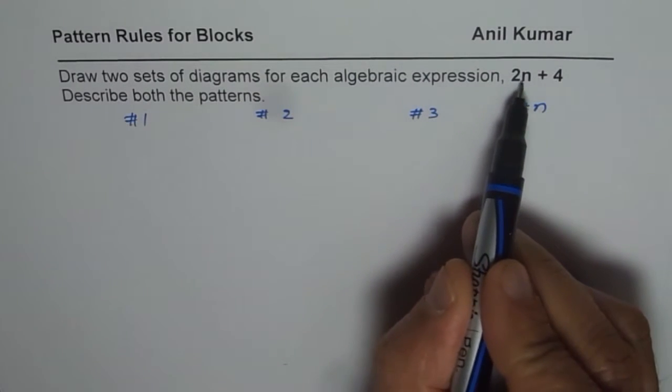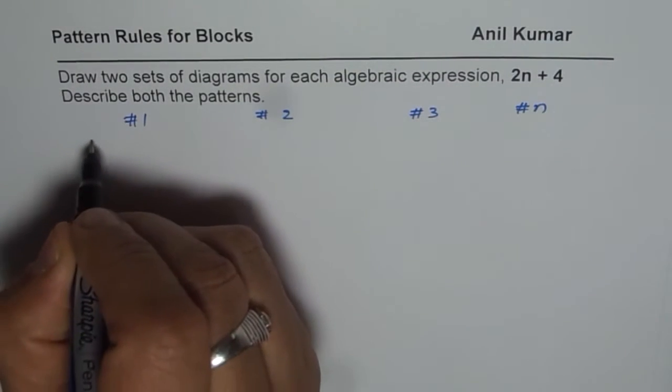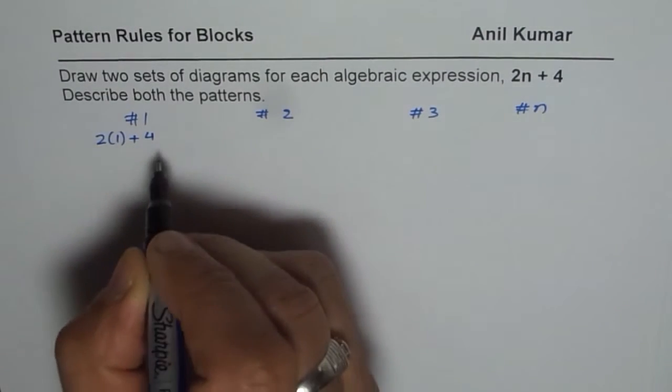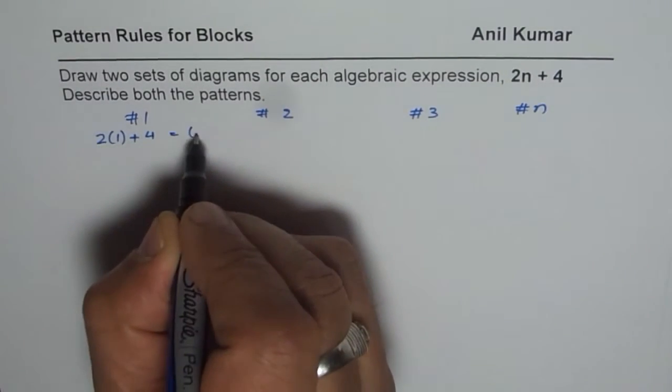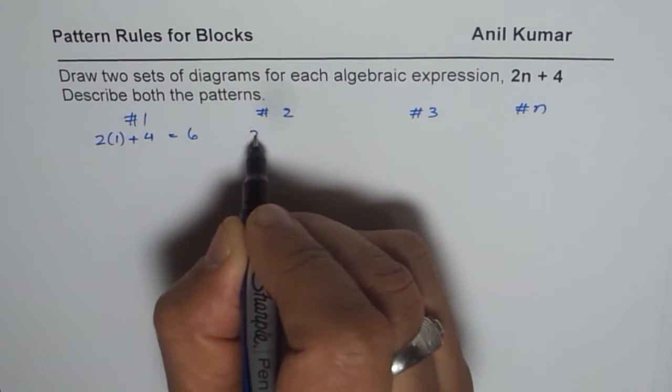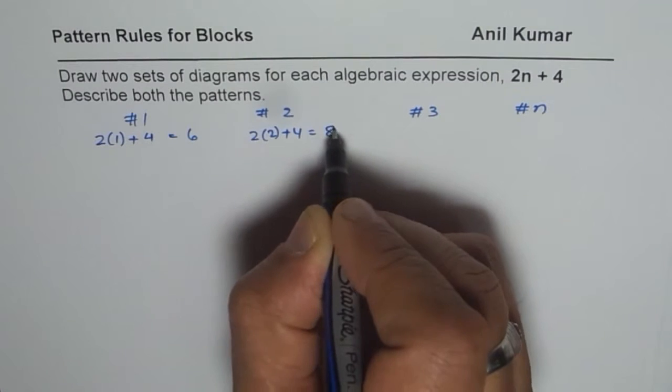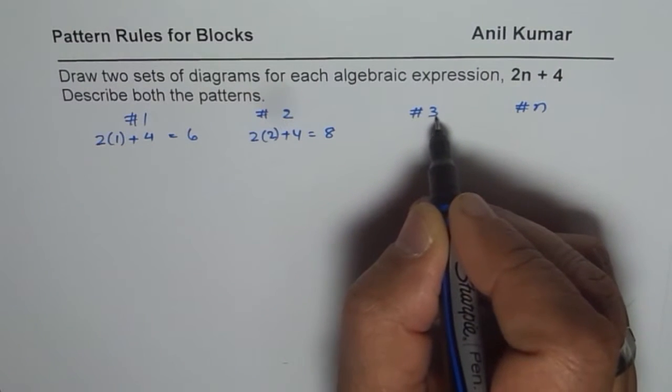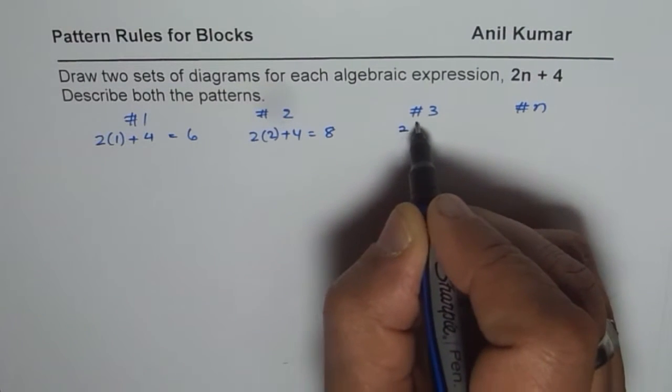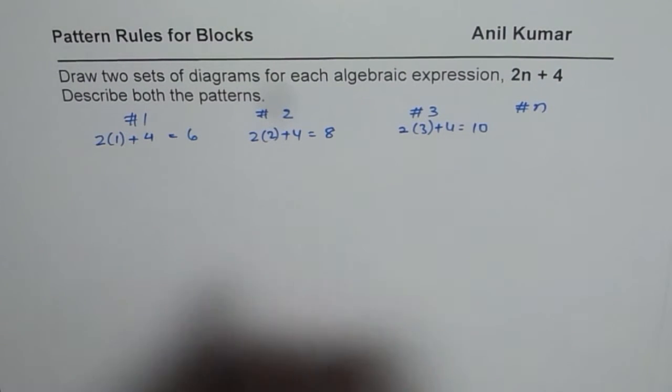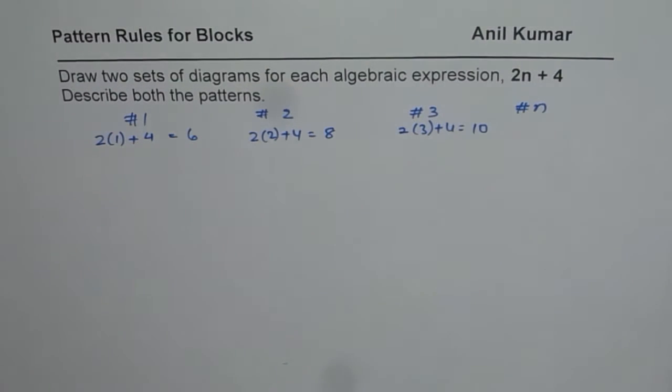If n is 1, how many blocks do I expect? 2 times 1 plus 4, which is 6. If n is 2, I expect 2 times 2 plus 4, which is 8. For the third pattern, it's 2 times 3 plus 4, which is 10 blocks.